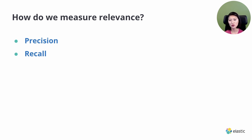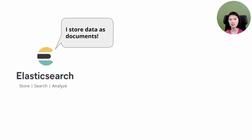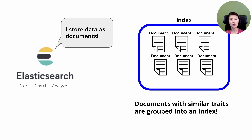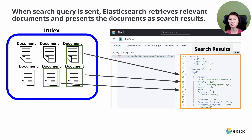How do we measure the relevance of our search results? The two factors we'll focus on are precision and recall. As a quick review, Elasticsearch is a search engine that allows us to store, search, and analyze data. It stores data as documents, and documents that share similar traits are grouped into an index. When you search for something, Elasticsearch retrieves relevant documents and presents them as search results.